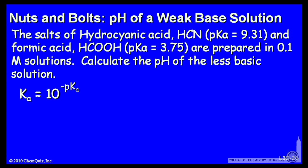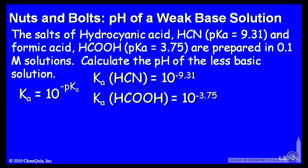So if I have a Ka or a pKa, I can interconvert. Ka is 10 to the minus pKa. I've been given pKa's here. So I can calculate the Ka's for HCN is 10 to the minus pKa. The Ka for formic acid, 10 to the minus pKa. And I can do the math there and get the equilibrium constants.